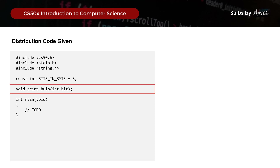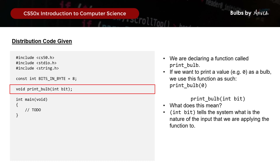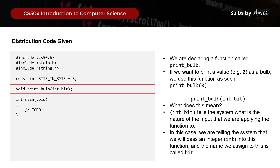Next, we'll declare a function called printbulb. When we have our binary value - for example a value of 0 - we'll apply the printbulb function to it. The distribution code states printbulb(int bit). This means when we call printbulb later, we'll be passing an integer into this function, and this integer will be called bit.